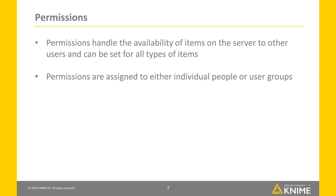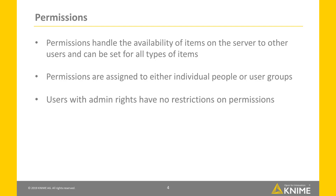Permissions can also be assigned to individual people or to different user groups. User groups are defined by the server administrators who have admin rights, for example one user group for each department or research team. There is one special predefined group which has admin rights. In addition, admin rights can be given to any user or group.